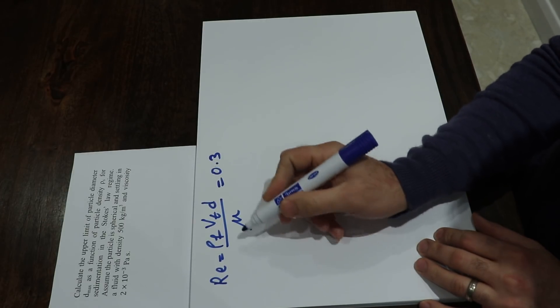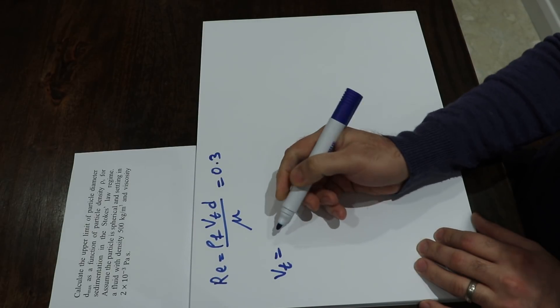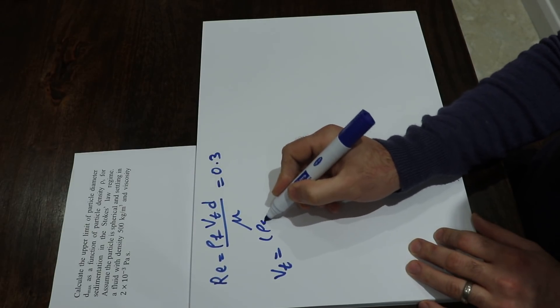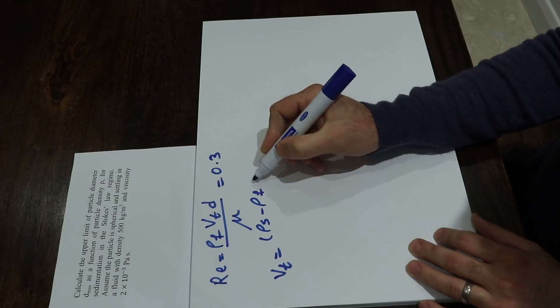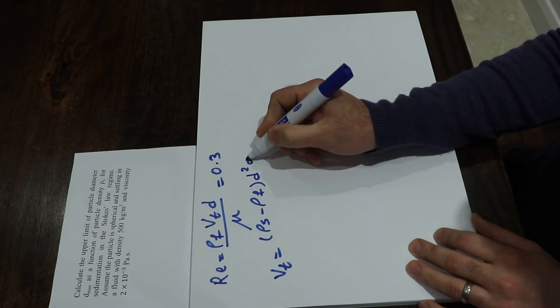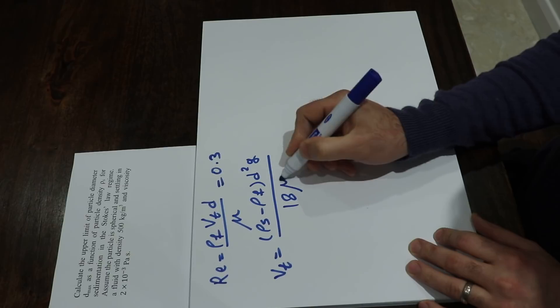On the other hand, we know that the terminal velocity in the Stokes regime can be calculated as (ρ_s minus ρ_f) times d squared g divided by 18 times μ.